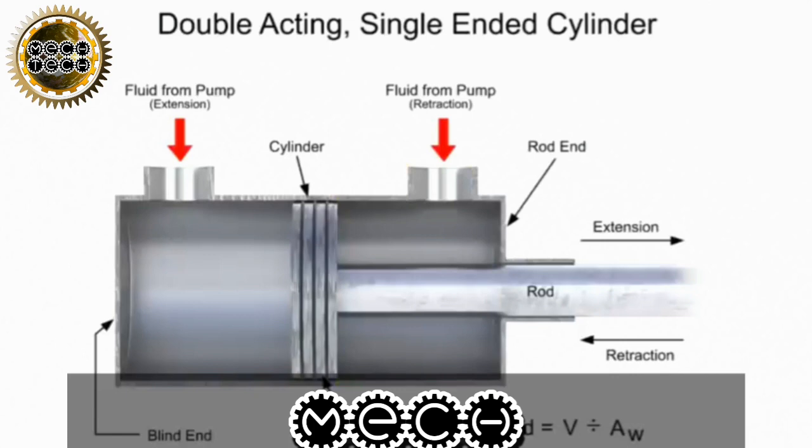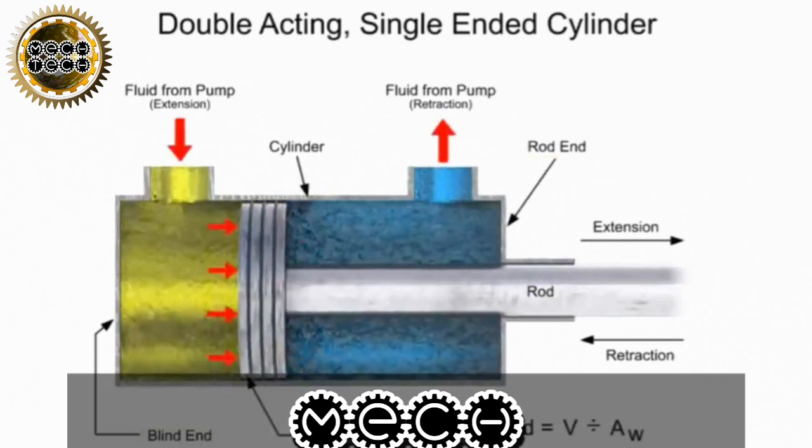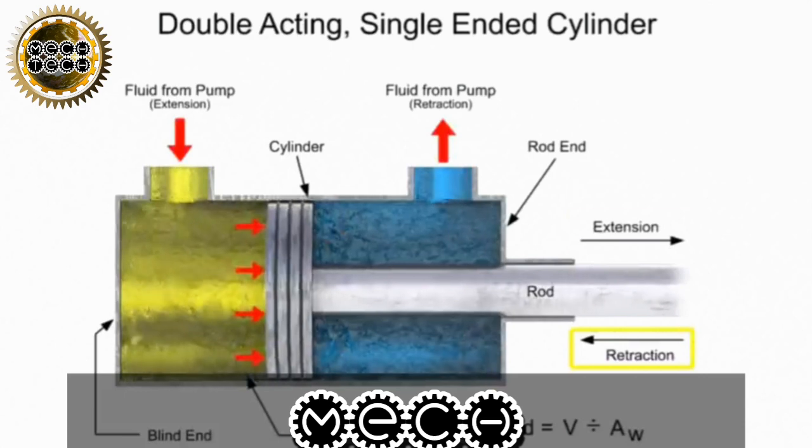Let's assume that the volumetric flow rate is equal for each inlet. Because the rod takes up space within the cylinder, less fluid is required to fill that side. This means that the fluid can fill the rod end side more quickly than it can fill the blind end. Since the rod end side fills with fluid more quickly, the cylinder will always retract faster than it can extend.